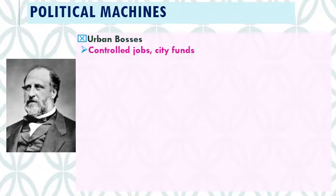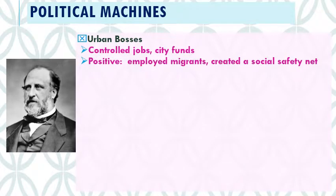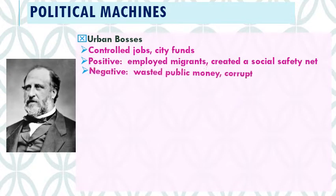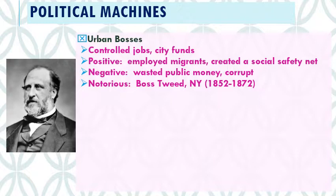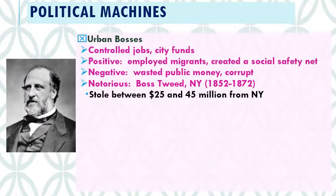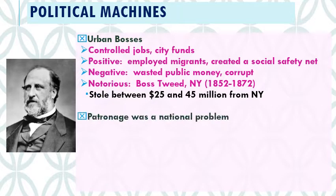These urban bosses controlled city jobs and city funds. On the positive side, they did employ migrants and created a social safety net by spending large amounts of money on building projects. On the negative side, they took public money for themselves and ensured only their friends got city jobs. The most notorious was Boss Tweed, who basically ran New York as his personal playground from 1852 to 1872, stealing somewhere between 25 and 45 million dollars from the state and the people of New York.